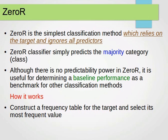Now the way it works: it constructs a frequency table for the target and selects its most frequent value. What that means is we ignore the other features, we only look at the class. We build a frequency table from the class. For any new input, we always predict it to be the majority of the classes from the class column.